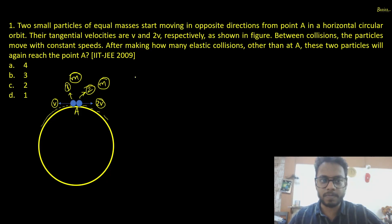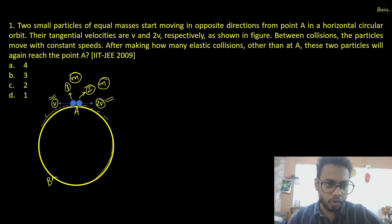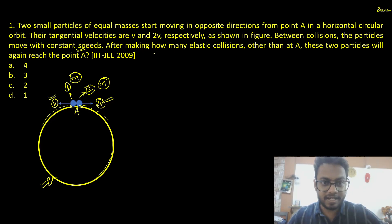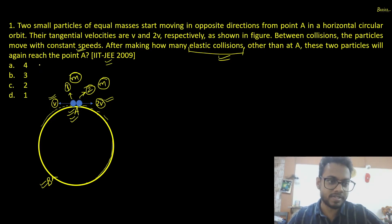Between collisions, the particles move with constant speed. There will be a collision at some point B where both particles arrive at the same time. The question asks: after how many elastic collisions, other than at point A, will the particles again reach point A? This is a slightly difficult question, so we need to think carefully about how to approach it.